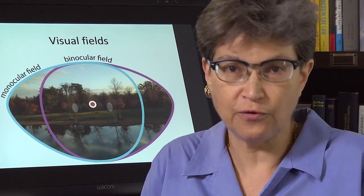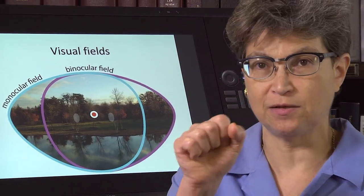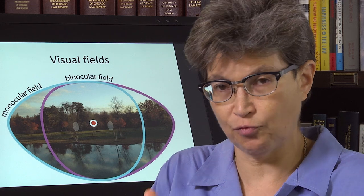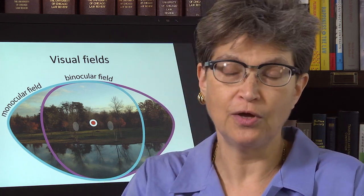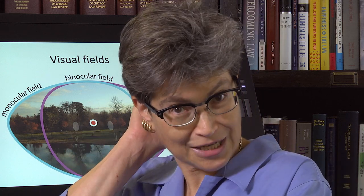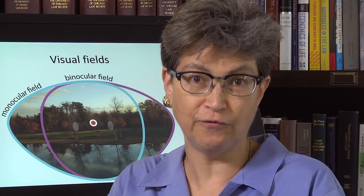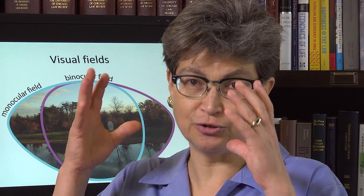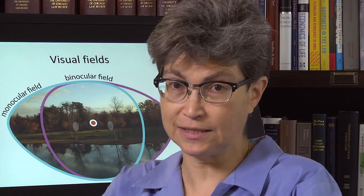What is the physical basis of the blind spot? It is where all the axons of the retinal ganglion cells collect to form the optic nerve. So where you have the optic nerve, you actually have no room for anything else, including photoreceptors. So there are no photoreceptors there — just all these collecting axons.